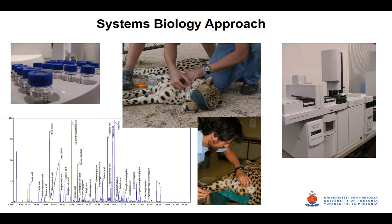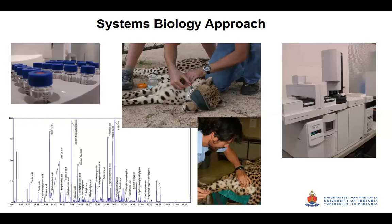Metabolomics studies in veterinary science are still very rare today. There are a few studies in dogs, and many animal studies are done in mice. For wildlife specifically, it is very rare, and metabolomics used to monitor environmental changes and toxicity does exist, but for individual species the studies are still very scarce. There is no real foundation of knowledge to build on. The aim of my PhD was to set the stage — to get a baseline of information and develop an understanding of differences between captive and wild cheetahs over time.